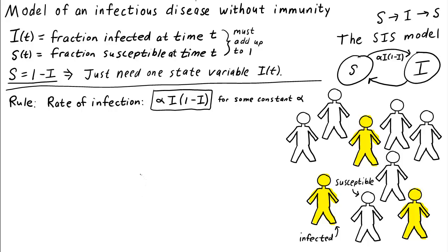To finish describing our dynamical rule, we need to determine the rate of the other arrow, the rate at which infected individuals recover. What's a reasonable way to model this rate? We'll assume that the recovery process doesn't involve the susceptible folks, but just that an individual infected person will recover at some rate.